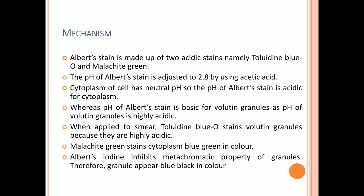Mechanism: Albert's stain is made up of two acidic stains, namely toluidine blue and malachite green. The pH of Albert's stain is adjusted to 2.8 by using acetic acid. The cytoplasm of the cell has a neutral pH, so the pH of Albert's stain is acidic relative to the cytoplasm, whereas it is basic relative to volutin granules, as the pH of volutin granules is highly acidic.